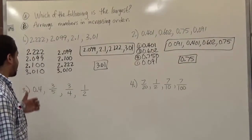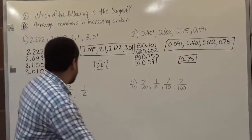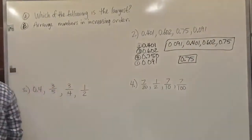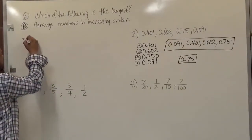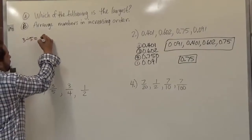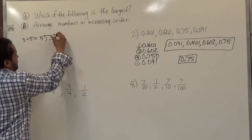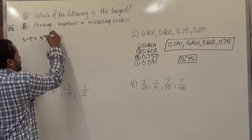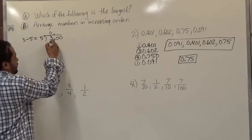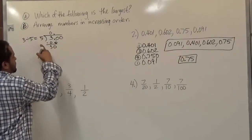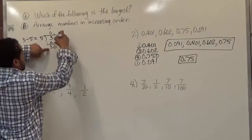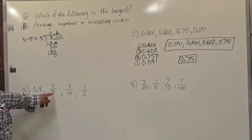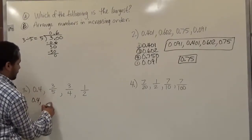So here we have the fraction 3 over 5, which is 3 divided by 5. So 5 goes into 3 — we add the decimal place and as many zeros as we need. 5 does not divide 3, so we add a 0 on top. That gives us 5 times 0 is 0, subtract to get 3, carry down the next 0 to get 30. Now 5 goes into 30 exactly 6 times, giving us a remainder of 0. So 3 over 5 becomes 0.6.